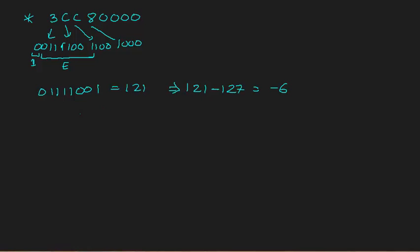The remaining 23 bits represent the mantissa. Since we know there's always a fixed leading 1 before the decimal point in normalized form, we write 1 followed by the 23 mantissa bits: 1.0010001000... with 2 to the power of minus 6. This leading 1 is always implicit and does not represent the sign.